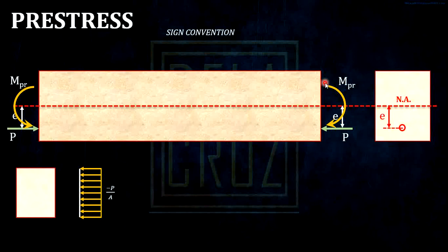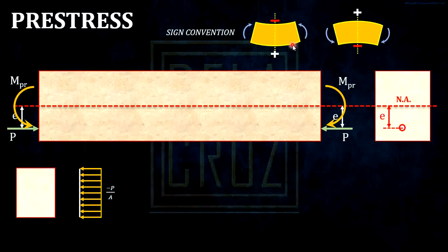If you cannot imagine that well, remember this sign convention: the moment that will tend to bend the beam upward will cause compression stress at top fiber and tension stress at bottom fiber. Otherwise, the moment that will tend to bend the beam downward: the top fiber will be in tension and the bottom fiber will be in compression. In this case, it will tend to bend the beam downward.